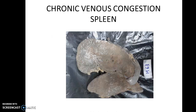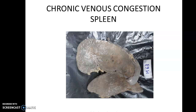Then we have another large specimen of enlarged spleen — this is a CVC spleen, or chronic venous congestion of the spleen. The examiner can ask you the causes of chronic venous congestion. Venous congestion of the systemic organs is because of right heart failure, whereas left heart failure leads to CVC lung.